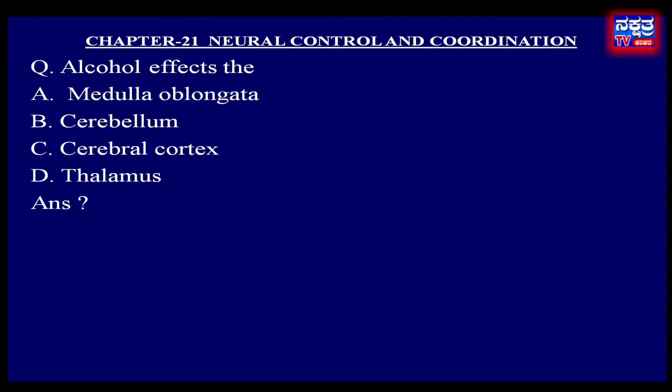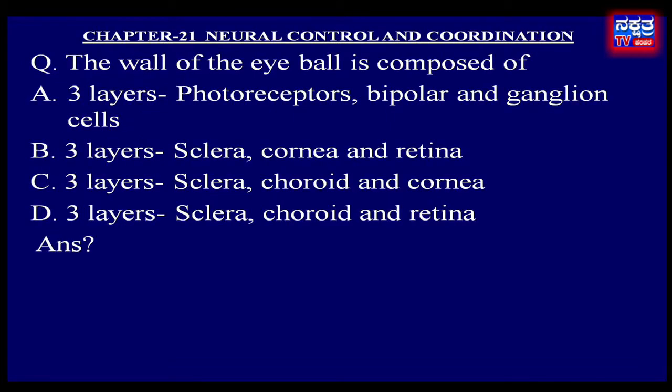The wall of the eyeball is composed of: A. Three layers — photoreceptors, bipolar and ganglion cells. B. Three layers — sclera, cornea and retina. C. Three layers — sclera, choroid and cornea. D. Three layers — sclera, choroid and retina.